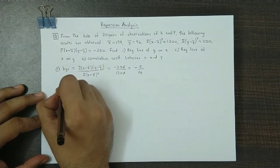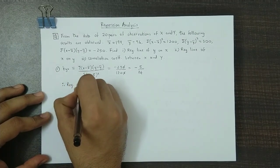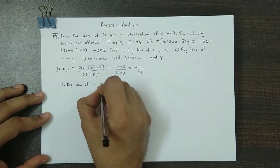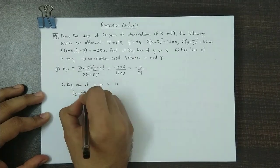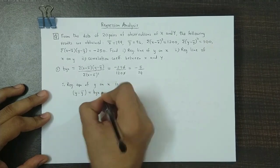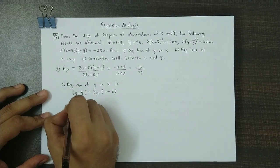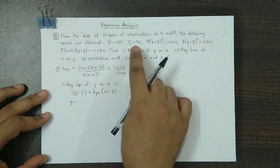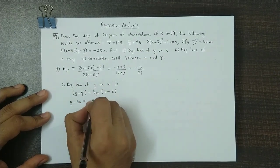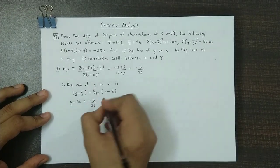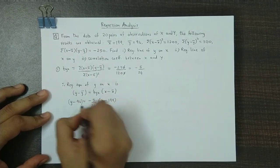Now we can obtain the regression equation of y on x. The formula is y minus y bar equals byx times (x minus x bar). Substituting: y minus 94 equals minus 5 by 24 times (x minus 199).